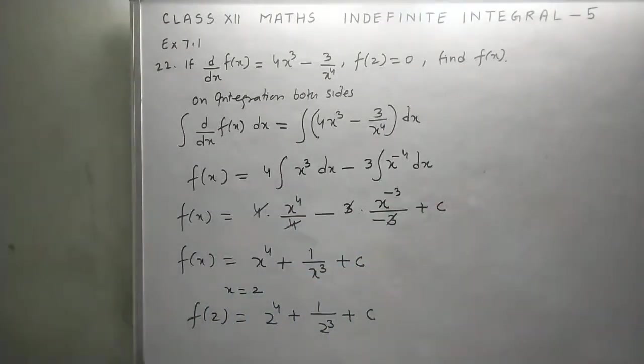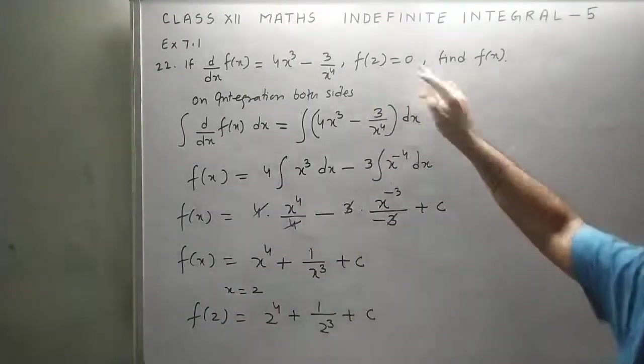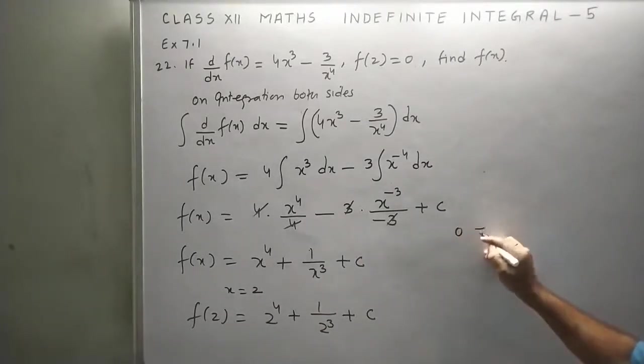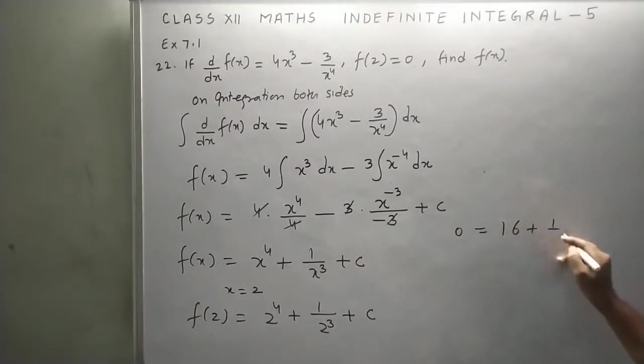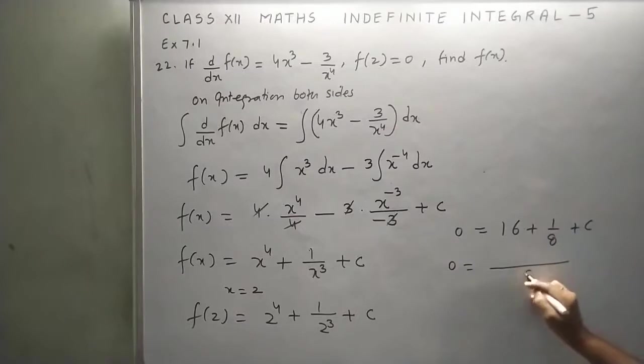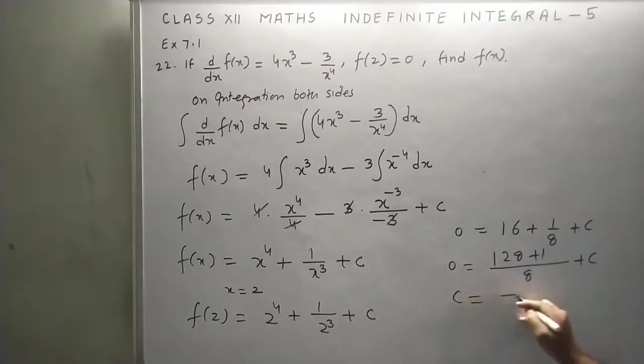Now, f(2) is given as 0. So, we have 0 is equal to 16 plus 1 upon 8 plus c. You can take LCM. This is 128 plus 1 plus c. c is equal to minus 129 upon 8.